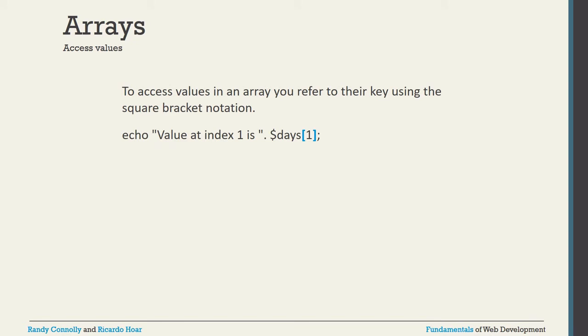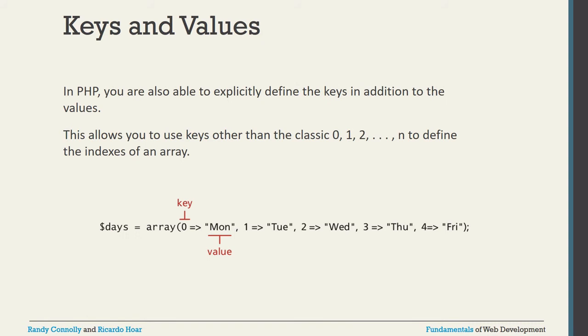To access a value using its key, simply use the echo command. For example, dollar-sign days[1] will display whatever value is stored at index 1 of the array. Sometimes you may also need to use the key and value together.